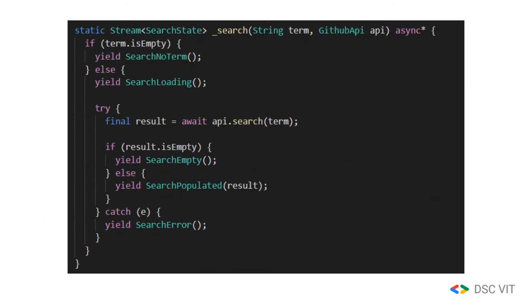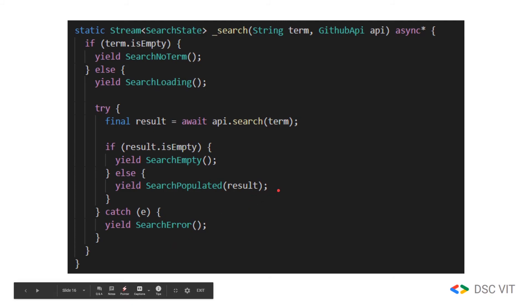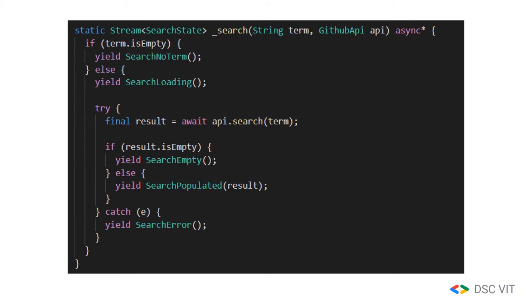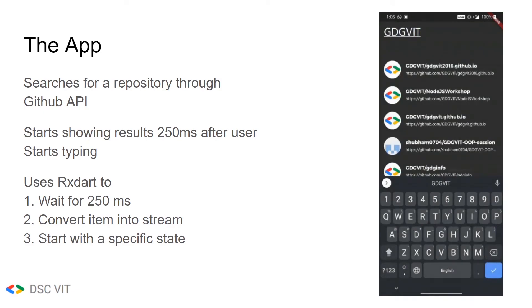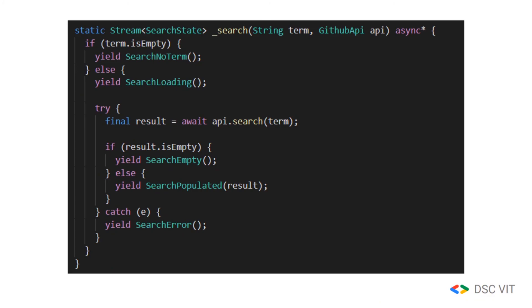So here, the mapper function is search. It maps the result of the API to the corresponding state — if it is success, it will show populated; and if it has an error, it will yield the error state. The result is passed to the UI, and the UI listens for these states and shows the correct response accordingly. So if it is successful, we see the result like this. If you like this video and want an in-depth video on RxDart and how to use it with BLoC, please like and comment on this video so we can make more such videos. Thanks a lot and happy Flutter day!